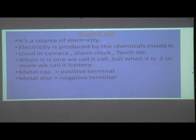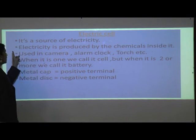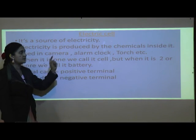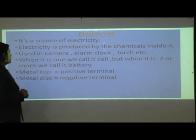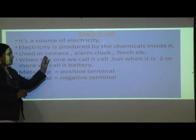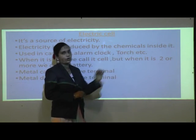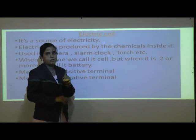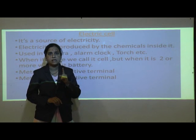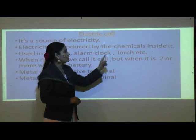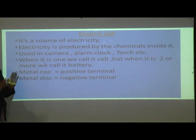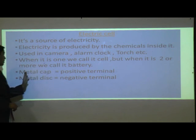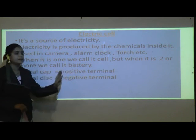An electric cell is a source of electricity. Electricity is produced by the chemicals inside it and is used in cameras, alarm clocks, torches, and more. When there is one cell we call it a cell; when there are two or more, we call it a battery. The metal cap is the positive terminal and the metal disc is the negative terminal.